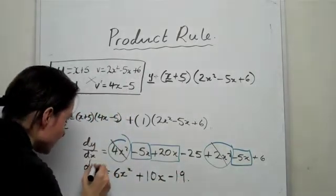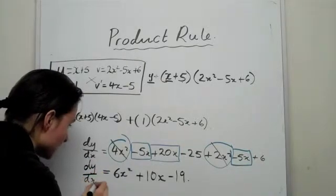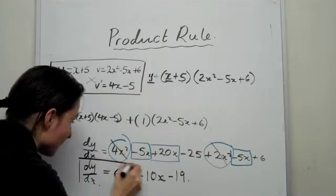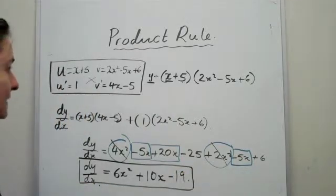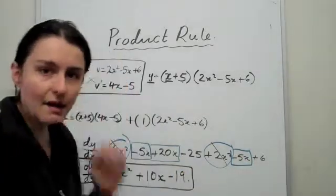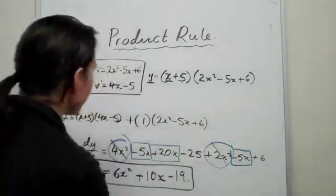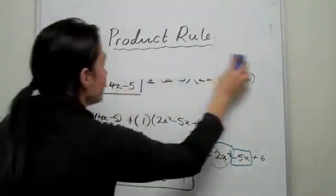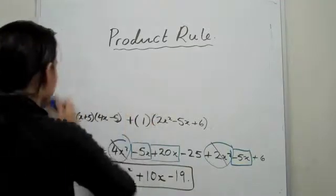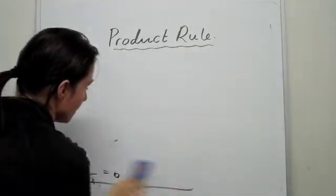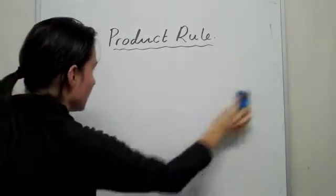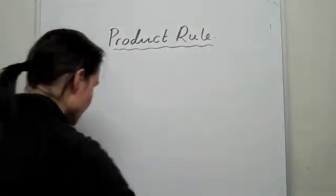And then finally you've got minus 25 plus 6, so you get minus 19. So that becomes a derivative, dy over dx. So now you've found it. Yeah, so that's one particular example. Now obviously these get harder, especially when you start looking at logarithms and things like that. I'll just do another example for you.